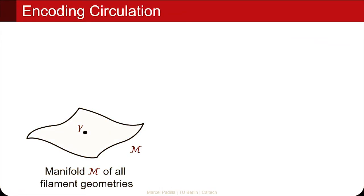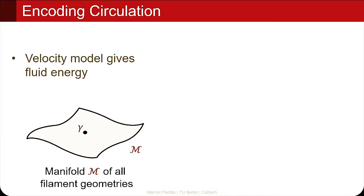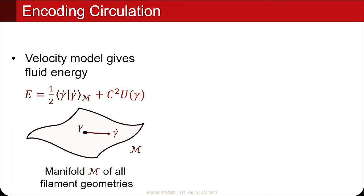Going back to the manifold with all these filament geometries: with our velocity model we can now describe the fluid energy. It consists of two terms. The first term can be understood as a kinetic energy on this manifold, because it has this quadratic form. But the second term is marked red because it does not allow us to encode the entire energy as a kinetic energy — it is the one that comes from the Biot-Savart velocity field, from the circulation.